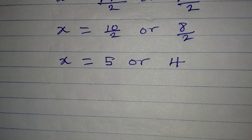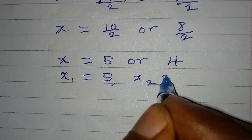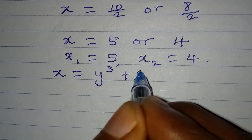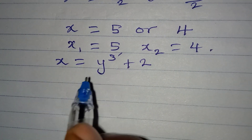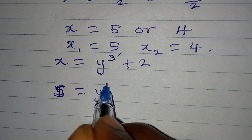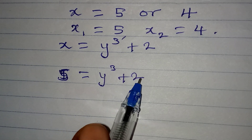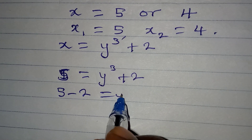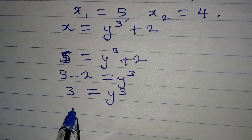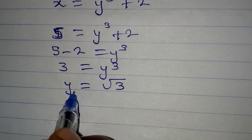We have x₁ = 5 and x₂ = 4. Remember that x = y³ + 2. Taking x = 5, it means 5 = y³ + 2. Bringing 2 to the left gives 5 - 2 = y³, so y³ = 3, meaning y₁ = ∛3.